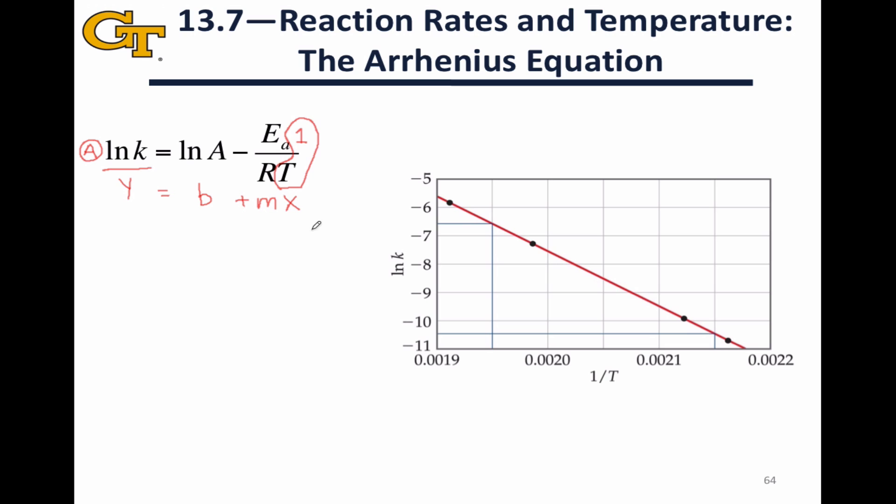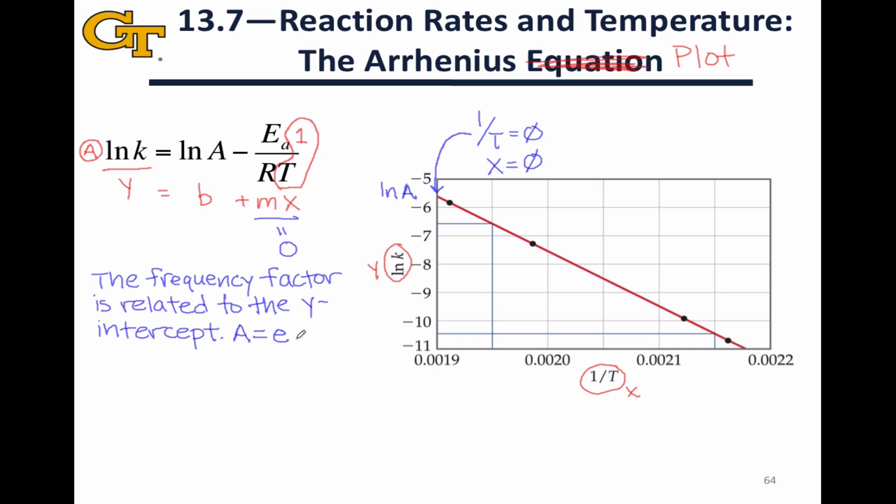When you plot the natural log of K versus one over T, if your data fits the Arrhenius equation, you should expect the form of a line, and that's what we see in this graph. This plot of the natural log of K on the Y-axis and one over the temperature in Kelvin on the X-axis is known as an Arrhenius plot. The linearity of this plot is grounded in the Arrhenius equation. When one over T is equal to zero, that means we're at zero on the X-axis of this graph, which corresponds to the Y-intercept. In that case, this entire Mx term is going to come out to zero, and we're going to end up with Y is equal to the natural log of A. So the Y-intercept of this Arrhenius plot curve is related to the frequency factor. Specifically, the frequency factor is equal to e to the B power, where B is the Y-intercept.